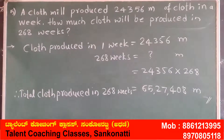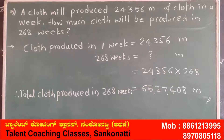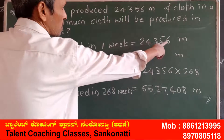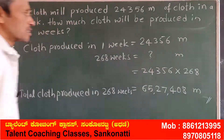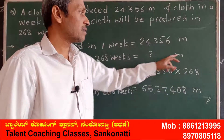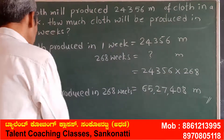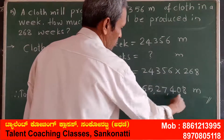Now we take the fifth problem. A cloth mill produced 24,356 meters of cloth in a week. How much cloth will be produced in 268 weeks? Cloth produced in one week is 24,356 meters. Cloth produced in 268 weeks is unknown. We will multiply cloth produced in one week by 268 weeks, then we will get cloth produced in 268 weeks. After multiplying, we get 65,27,408 meters. Therefore, total cloth produced in 268 weeks is 65,27,408 meters.